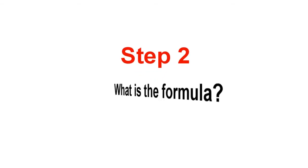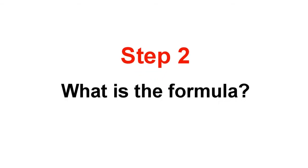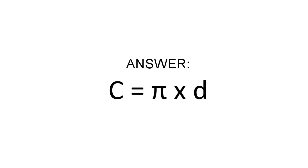Step 2: What is the formula? Since the diameter is given, then the correct formula will be: Circumference is equal to pi times the diameter.